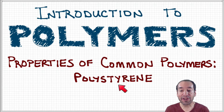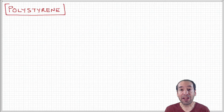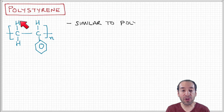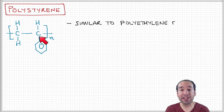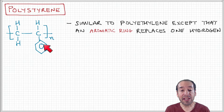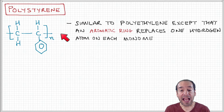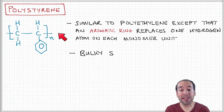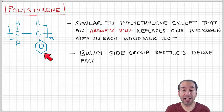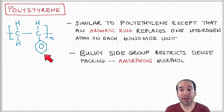Another polymer I'd like to talk about is polystyrene. This is an important example because on the surface, this material is very similar to polyethylene. Remember, polyethylene is a carbon-carbon backbone with four hydrogen side groups. Polystyrene is essentially the same thing, except that one of the hydrogens has been replaced with this aromatic ring — this benzene ring — and this structure then repeats along the backbone of the polymer. This seemingly small change actually has a major impact on the physical properties of polystyrene, making it much different from polyethylene.